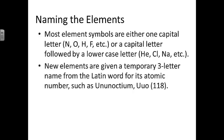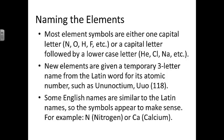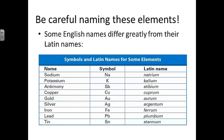New elements are given a temporary three-letter name from the Latin word for its atomic number, such as ununoctium, abbreviated UUO, which stands for element number 118. Some English names are similar to the Latin names, so the symbols appear to make sense, such as N standing for nitrogen, or Ca standing for calcium. However, some English names differ greatly from their Latin names. The symbol Na looks nothing like sodium, until you understand that the Latin name for sodium is natrium. K for potassium doesn't make sense until you see its Latin name is kalium, and so on. Make sure you look through these, because these are elements you're going to need to learn this year, ones that are harder to learn because the symbol does not seem to match the name we currently use.